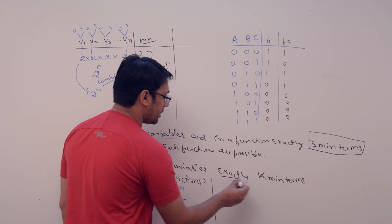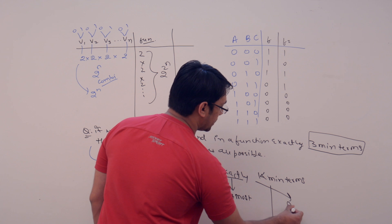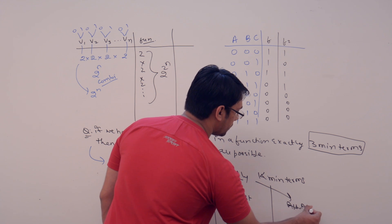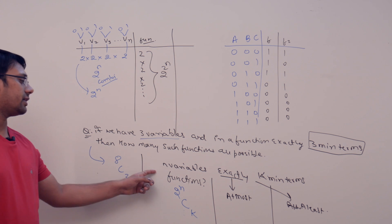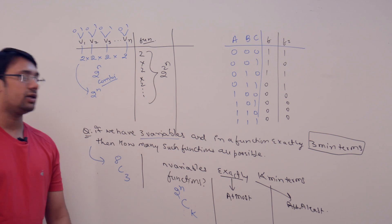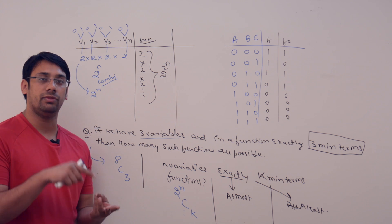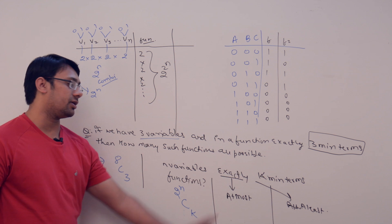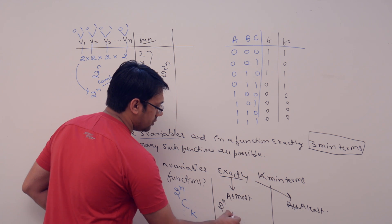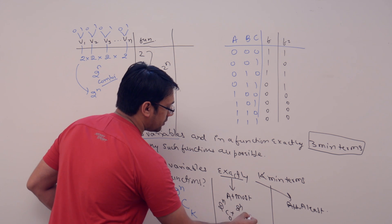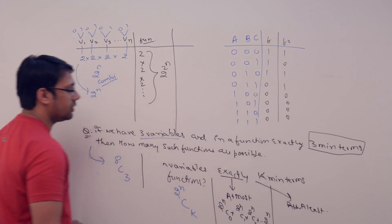But if the question says 'at most k minterms' instead of 'exactly,' that means there can be zero, one, two, ... up to a maximum of k minterms. In that case, how many functions are possible? It will be: C(2^n, 0) + C(2^n, 1) + C(2^n, 2) + ... + C(2^n, k).